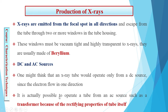It is usually possible to operate a tube from an AC source such as a transformer, because of the rectifying properties of the tube itself — the tube works only in one half-cycle, either negative or positive. Since electrons operate in the negative half-cycle, there will be no emission in the positive half-cycle. The AC transformer is very easy to access and very cheap, which is why we prefer to use it.